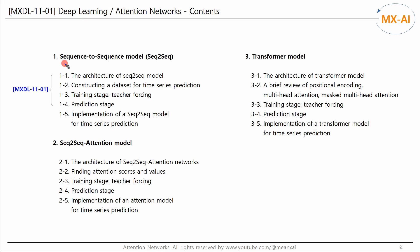Let's look at the full table of contents. This topic covers sequence-to-sequence, attention, and transformer networks. These are mainly used in natural language processing (NLP), but in this tutorial, we will apply them to time series forecasting. In later NLP courses, we will explore these in more detail and use them to create machine translators or chatbots.